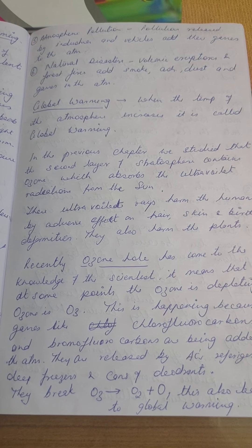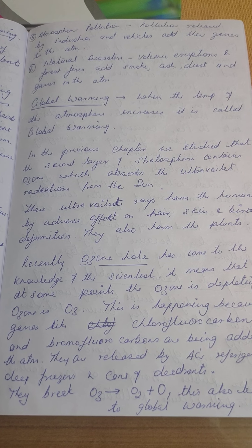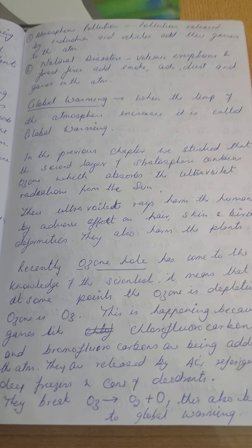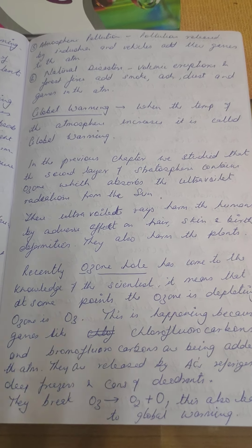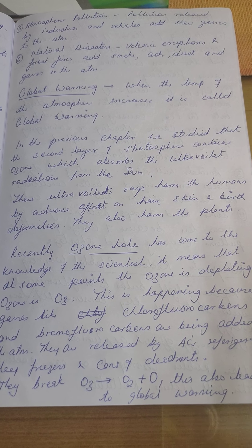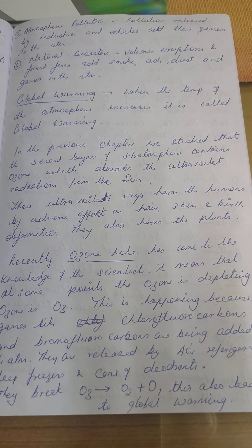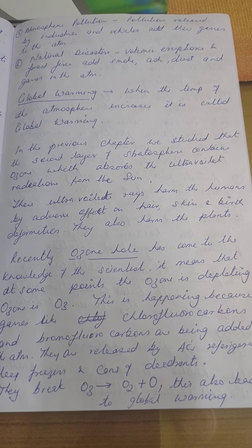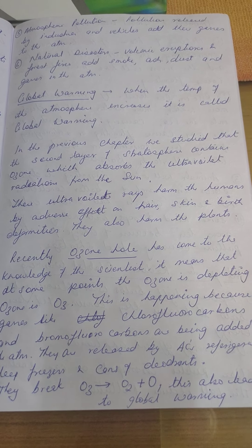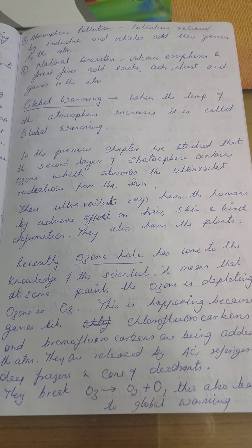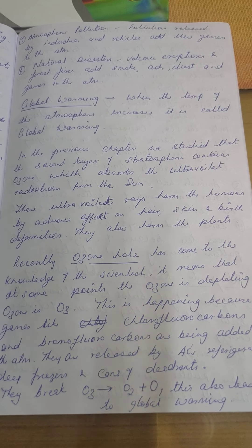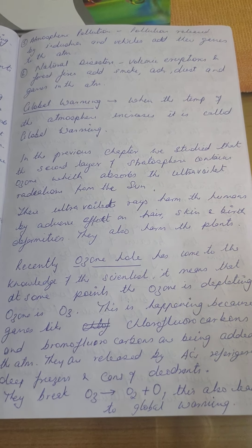A lot of diseases are caused in plants due to ultraviolet radiation. Recently, scientists have found that the ozone layer is becoming thinner — holes are being created in the ozone layer. At some points, the ozone is not present; it has vanished and depleted. Ozone is nothing but three molecules of oxygen together, written as O₃.